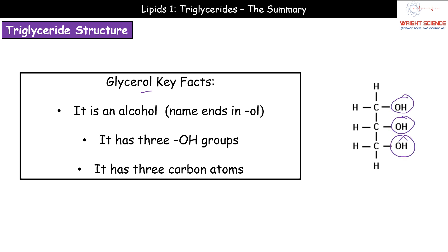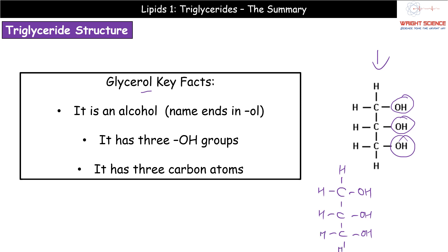We have three OH groups and three carbon atoms. You need to be able to draw this simple molecule and it's dead easy. All you need to do is remember three carbon atoms - put them in a little line for the backbone. Each carbon has the OH, and then remember carbon can make four bonds, so just stick on the other lines and chuck a hydrogen on the end of any empty bond. That is our glycerol.